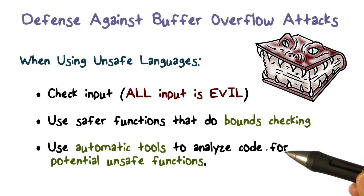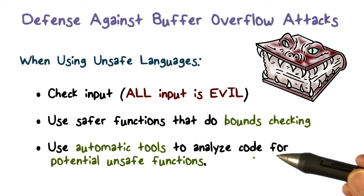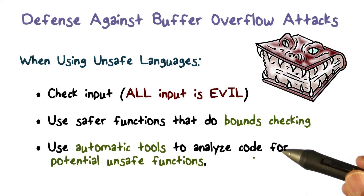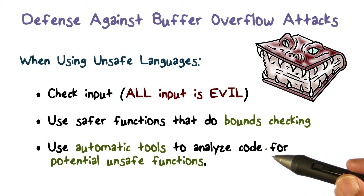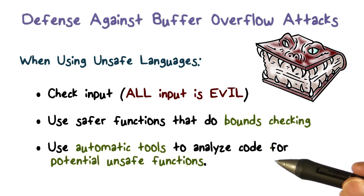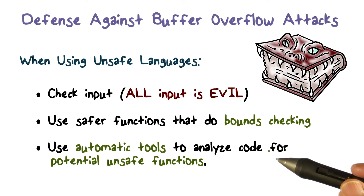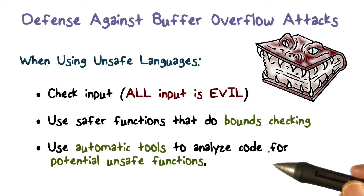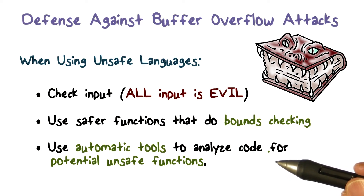Even when you are stuck programming in a language that's not going to help you with the kind of attack vulnerabilities we've been talking about, there are certainly things you can do as a programmer who wants to do secure programming: by checking input, using safer functions, and then checking your code through these tools. We'll have a long list of these tools that you can go and learn about.